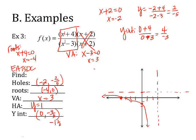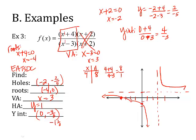For the right side, I need to test a point. Let's use x equals 4. Where x is 4, I have 4 plus 4 over 4 minus 3 — that's positive 8 over 1, so it's 8. So the curve is way up there.